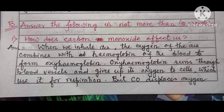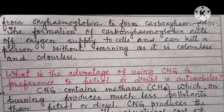Exercise B: Answer the following questions in not more than 40 words. Question 1: How does carbon monoxide affect us? Answer: When we inhale air, the oxygen of the air combines with hemoglobin of the blood to form oxyhemoglobin. Oxyhemoglobin runs through blood vessels and gives up its oxygen to cells which use it for respiration. But carbon monoxide displaces oxygen from oxyhemoglobin to form carboxyhemoglobin. The formation of carboxyhemoglobin cuts off the oxygen supply to cells and can kill a person without warning as it is colorless and odorless.